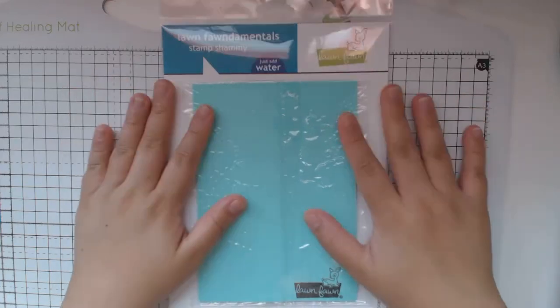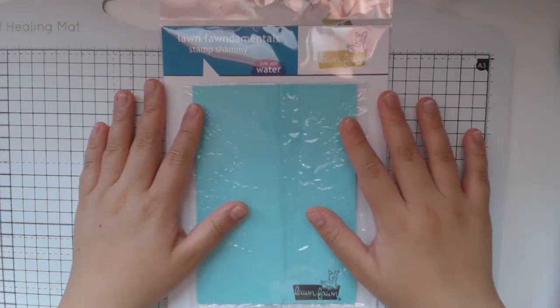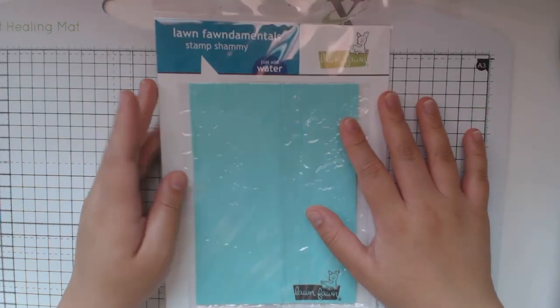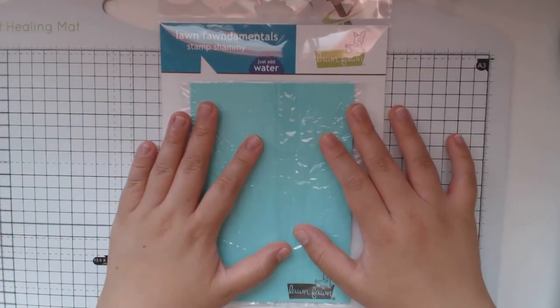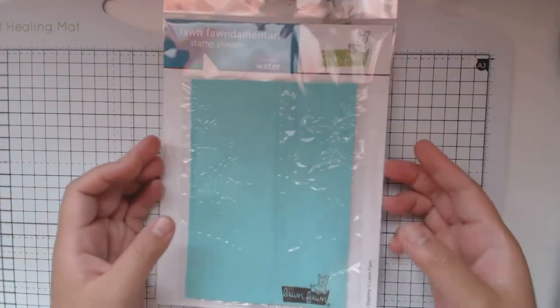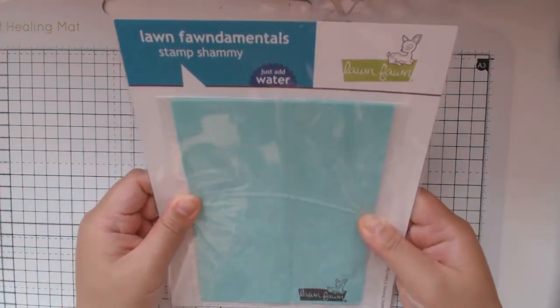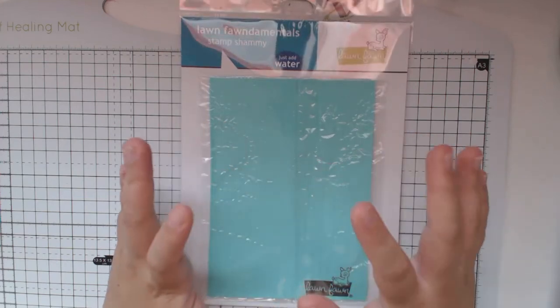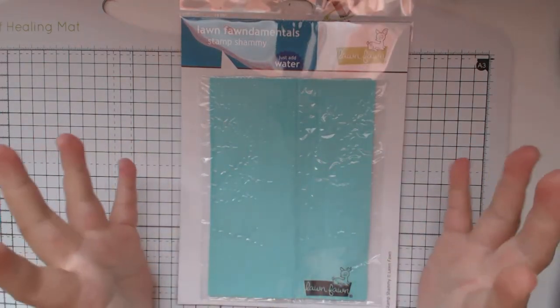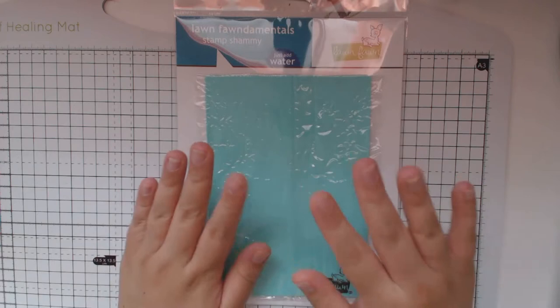Hello, good morning. Today we're going to try the Lawn Fawn stamp chamois. This is a reusable cleaning cloth - you just have to add water to make it soft. No special cleaning solution needed, just add water.